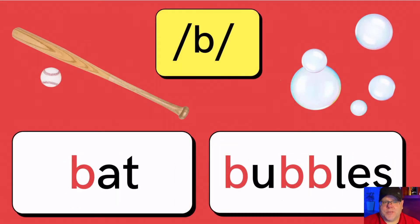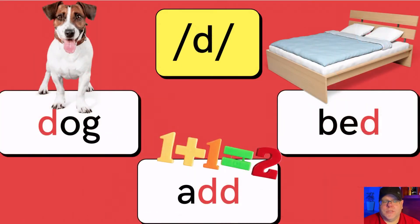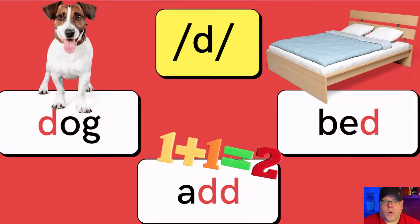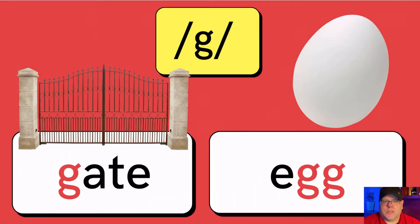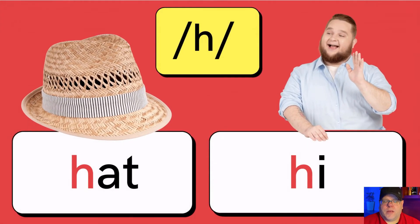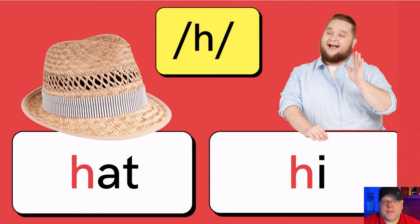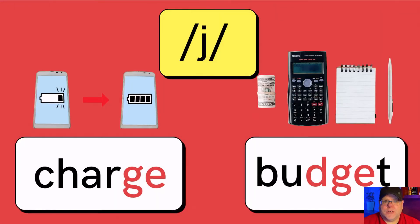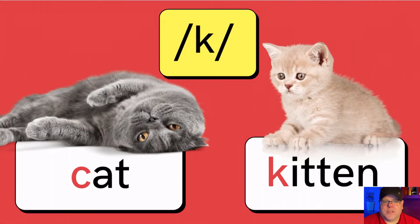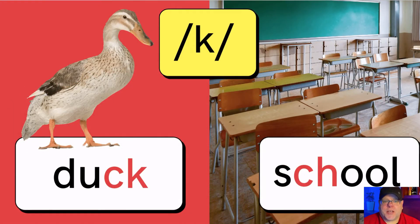B as in bat or bubbles. D as in dog, ad, or bed. F as in fat or phone. G as in gate or egg. H as in hat or high. J as in jar or age; J as in charge or budget. K as in cat or kitten. K as in duck or school.